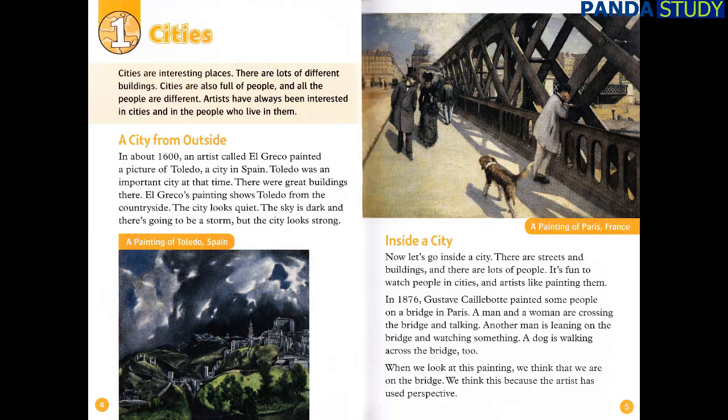Inside a City. Now, let's go inside a city. There are streets and buildings, and there are lots of people. It's fun to watch people in cities, and artists like painting them. In 1876, Gustave Caillebotte painted some people on a bridge in Paris. A man and a woman are crossing the bridge and talking. Another man is leaning on the bridge and watching something. A dog is walking across the bridge, too. When we look at this painting, we think that we are on the bridge. We think this because the artist has used perspective.